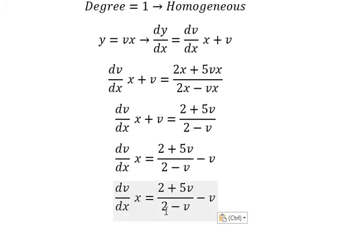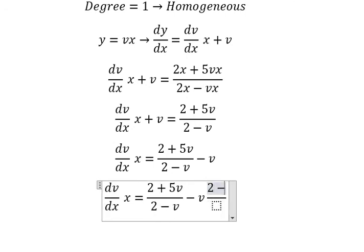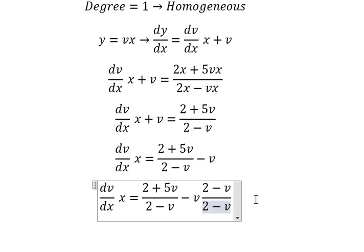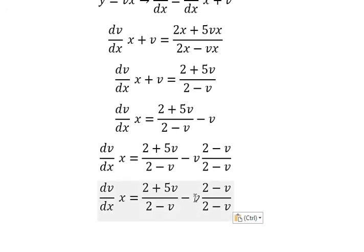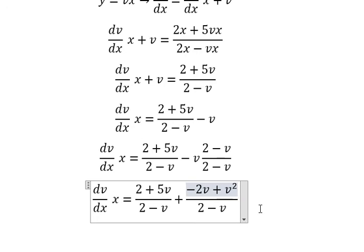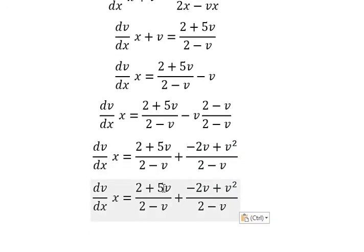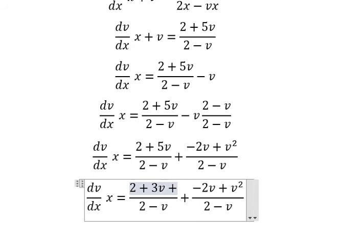Next we multiply by 2 minus v on numerator and denominator. Negative v with number 2 and negative v, so we will have negative 2v and positive v squared. 5 minus 2 we have 3 and v squared in here.